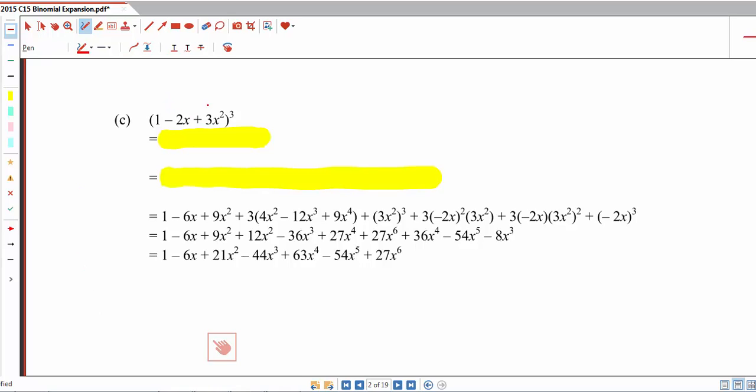Moving on to part c, now notice that there are 3 terms over here. So what we have to first do is to split them into 2 terms, your a and b. And you see that we can split it like this, where a is 1 and negative 2x plus 3x squared is b. Can we actually split this into 1 minus 2x and 3x squared instead?